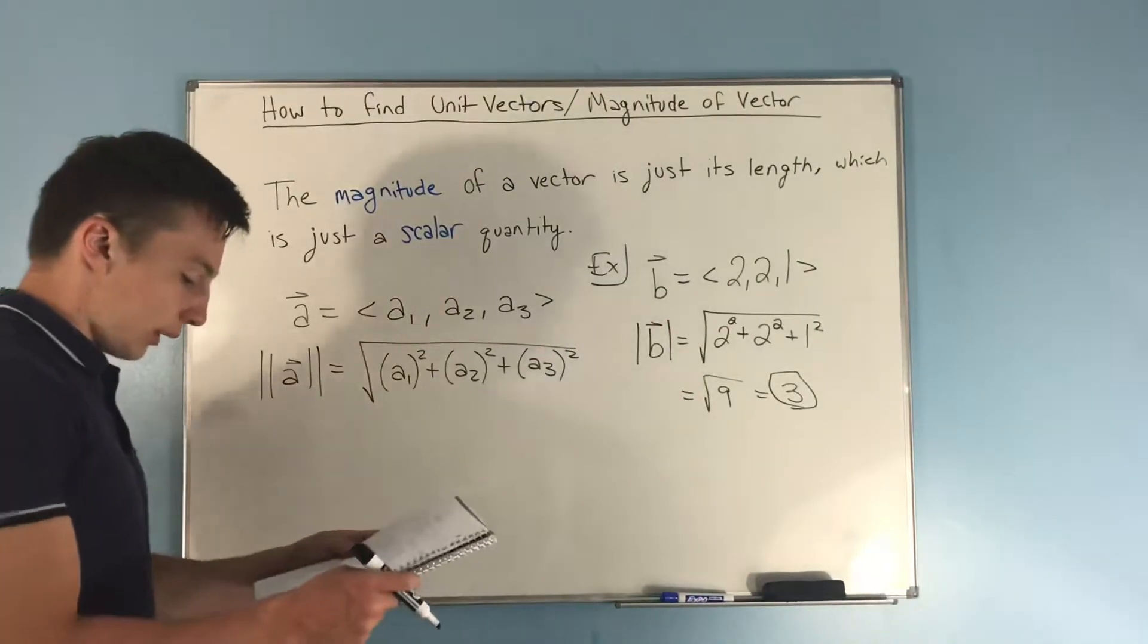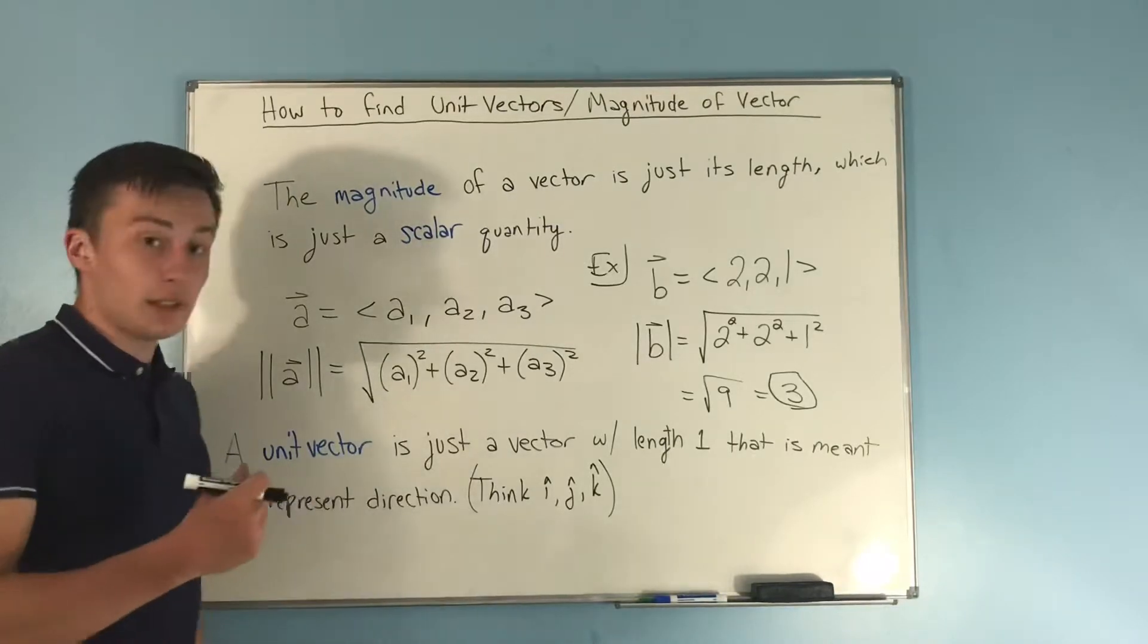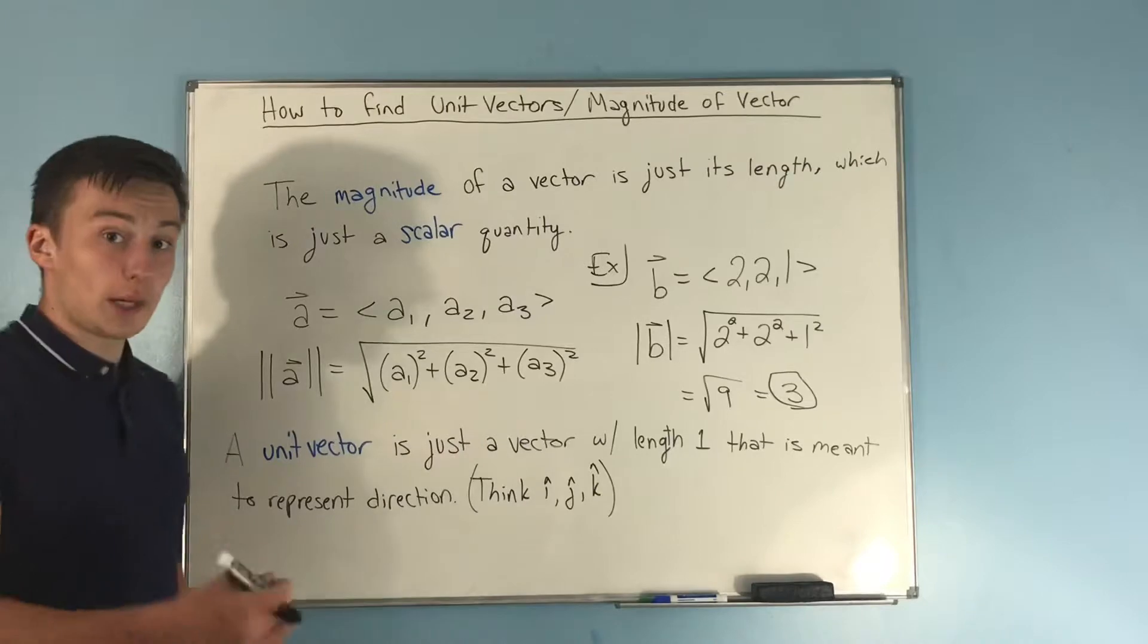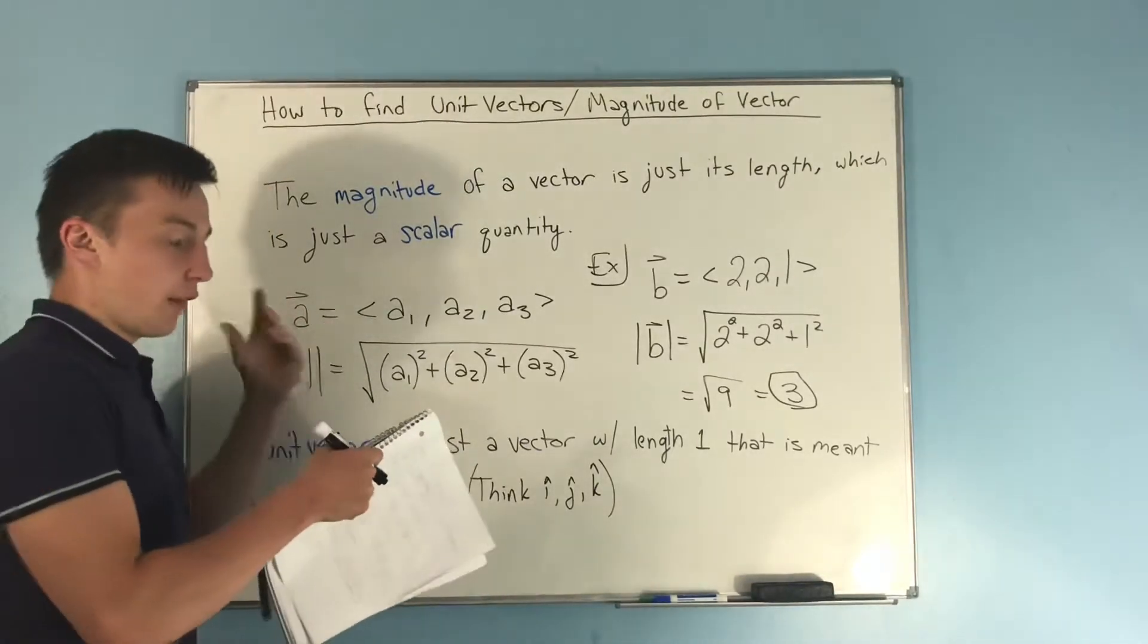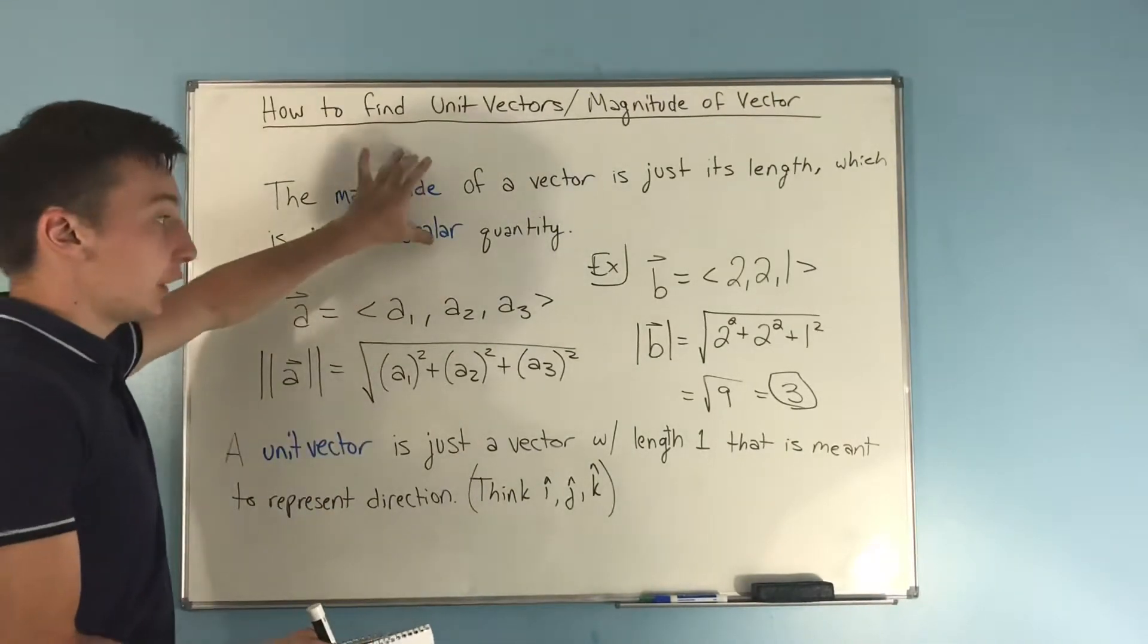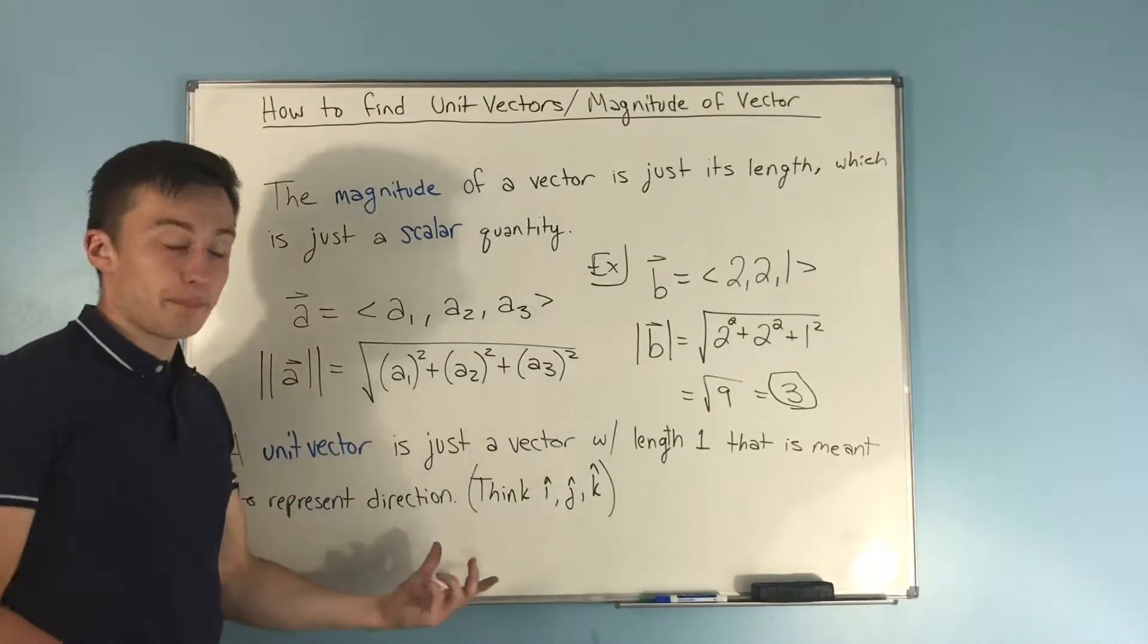So now we're going to talk about finding a unit vector. Now a unit vector is just really a vector with length 1, and it's meant to represent direction solely. So now we said we're breaking up a vector. A vector represents magnitude and direction. We broke it up into just the magnitude up here, and now we're breaking it up into just the direction down here.